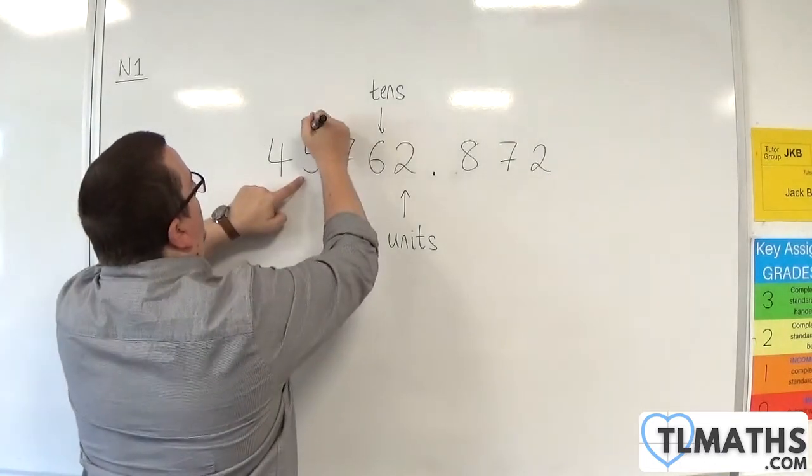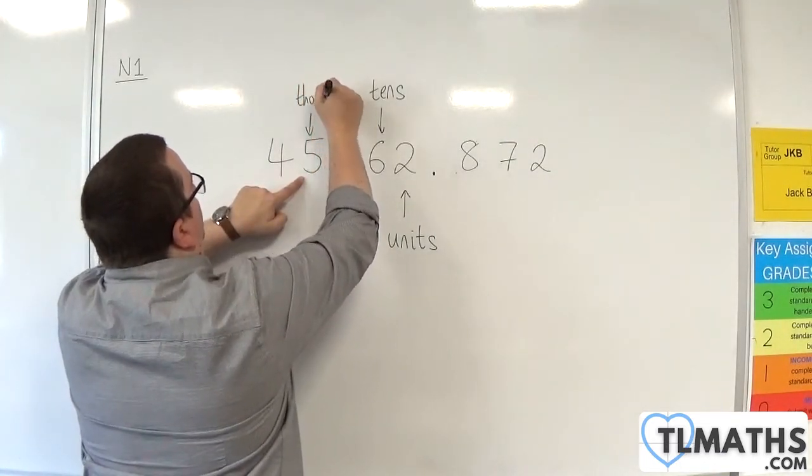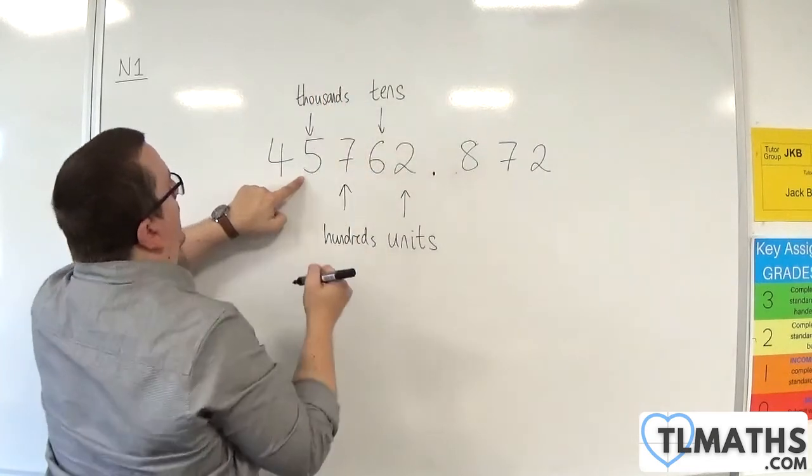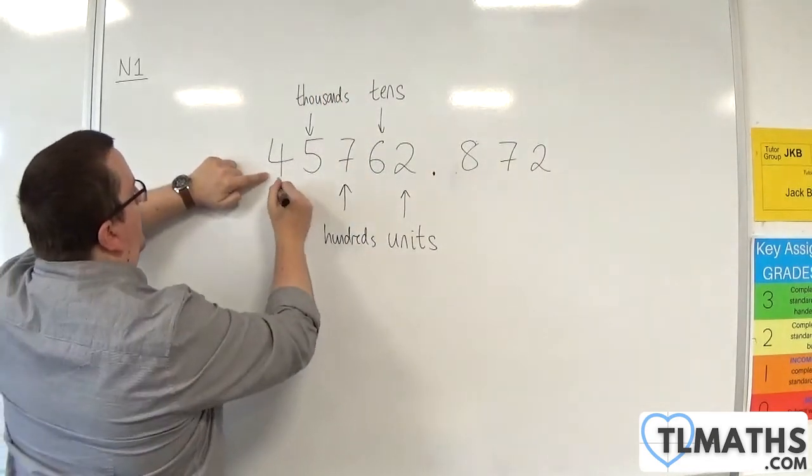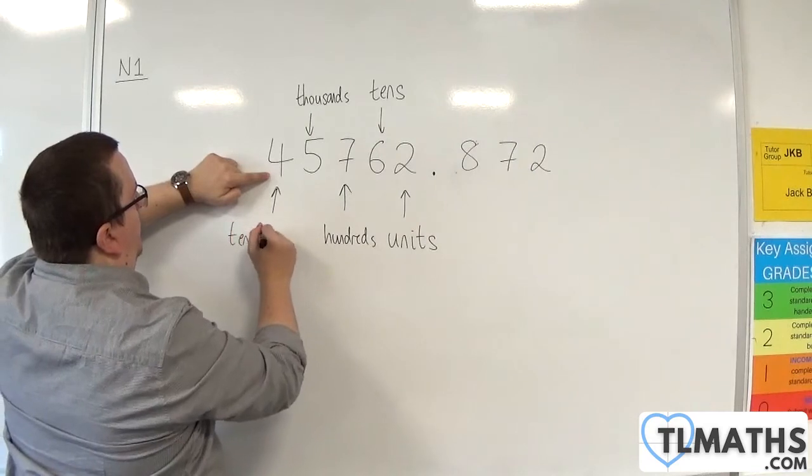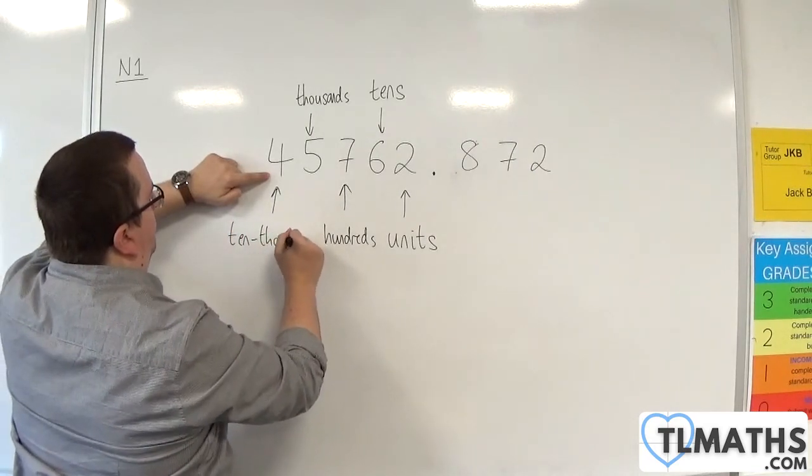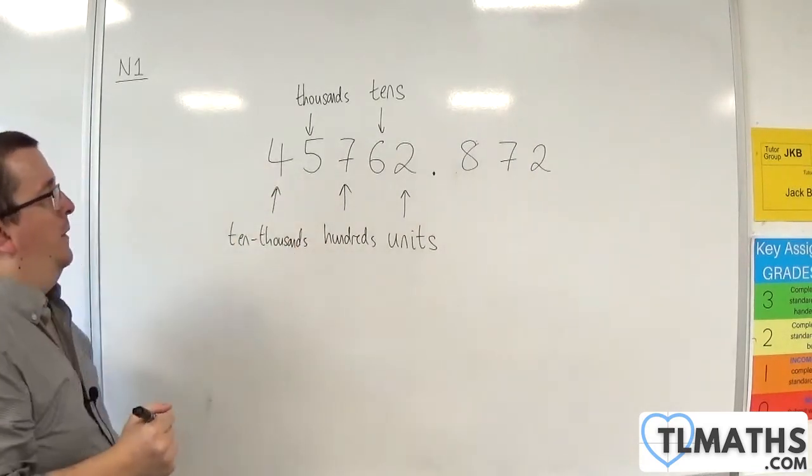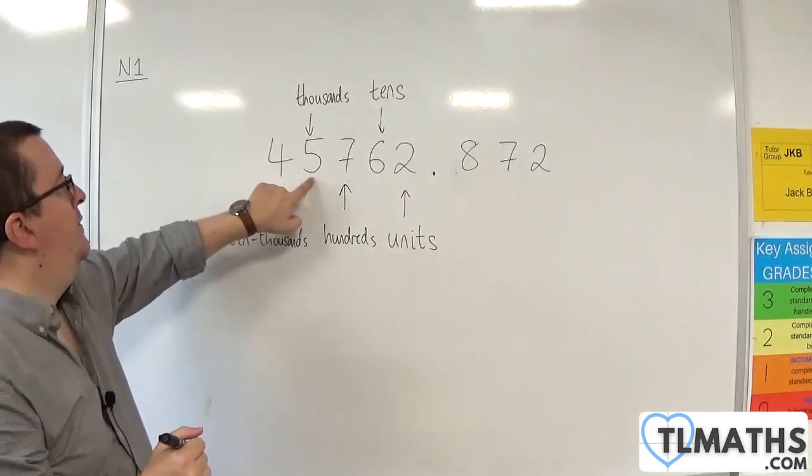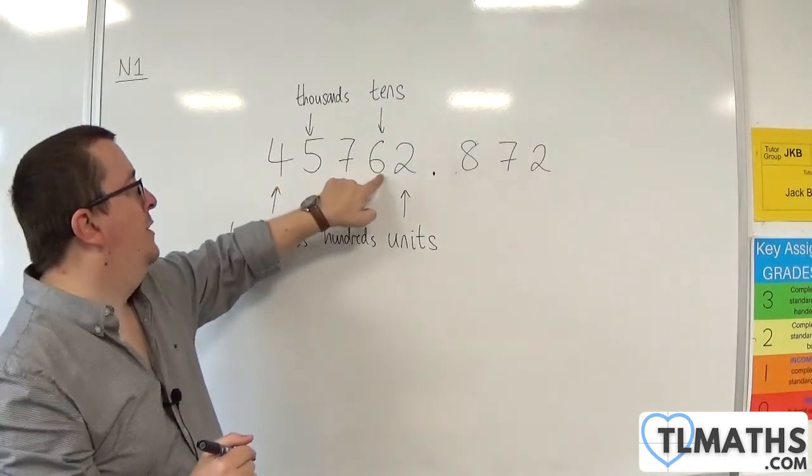Five is in the thousands column, and four is in the tens of thousands column. Okay, so 45,762.